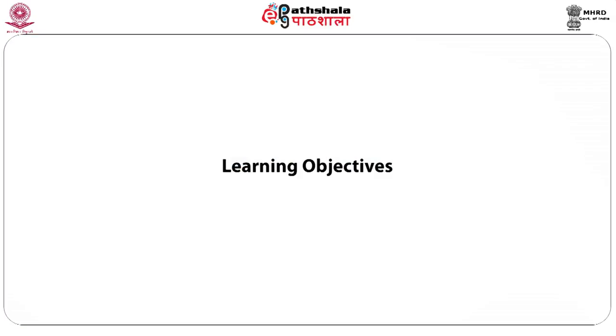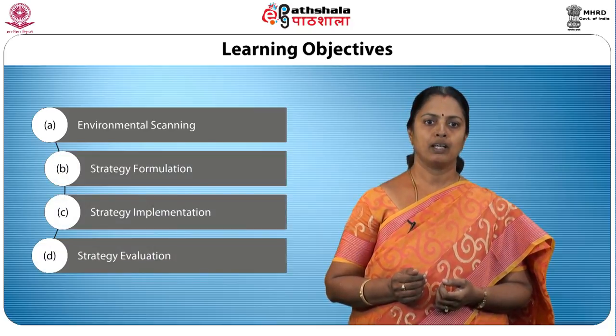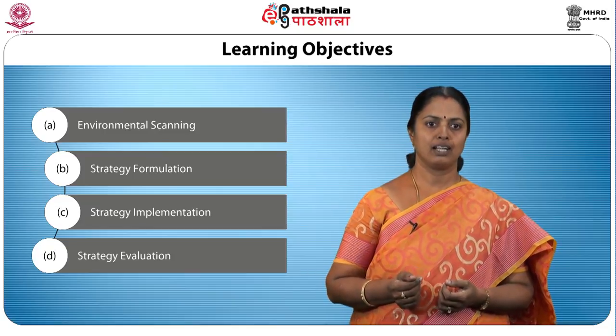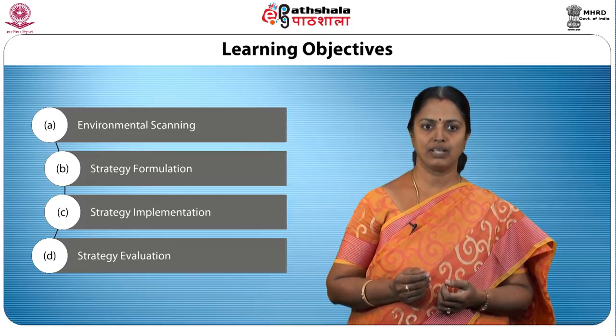Strategic management is a continuous process that appraises the business and industries in which the organization is involved. It appraises its competitors and fixes goals to meet all the present and future competitors and then reassesses each strategy. The strategic management process has four steps: environmental scanning, strategy formulation, strategy implementation, and strategy evaluation.